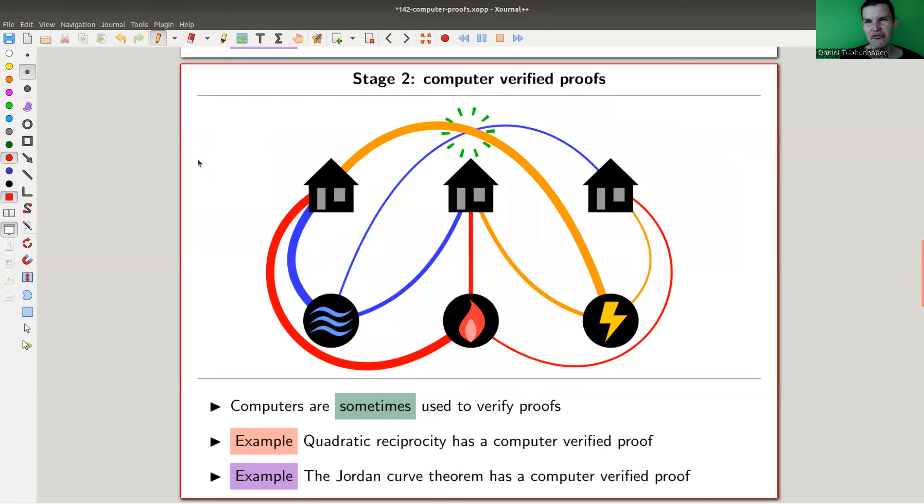That's computer-assisted proofs. As I said, it got roughly started in the 70s and is by now very well accepted. Literally everyone does it in some sense. The next step, stage two, got started also around the same time, but it's way slower in progressing. That's computer-verified proofs, and I think that's absolutely fabulous. Instead of doing a proof by hand, where you kind of read the argument and convince yourself that it's okay, which is always very questionable...